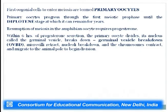After metamorphosis, the oogonial cells start entering meiosis and such cells are termed primary oocytes. The primary oocytes progress through the first meiotic prophase until the diplotene stage, at which they can remain arrested for years. The resumption of meiosis in the amphibian oocyte requires progesterone — this hormone lifts the diplotene block.